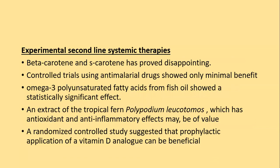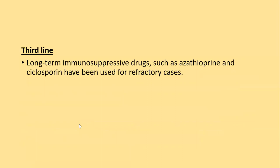Experimental second-line systemic therapies: beta-carotene and S-carotene are disappointing. Controlled trials using anti-malarial drugs show minimal benefit. Omega-3 polyunsaturated fatty acids from fish oil showed some statistically significant effect. Extract from the topical fern Polypodium leucotomos, which has antioxidant and anti-inflammatory effects, may be of value. A randomized controlled trial suggests prophylactic application of a vitamin D analogue can be beneficial. Third-line therapy for refractory cases includes immunosuppressive drugs such as azathioprine and cyclosporine.